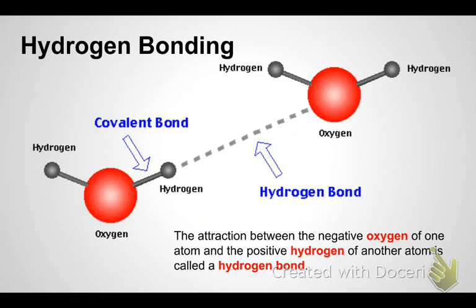Last but not least we have one of the most important properties of water which is hydrogen bonding. Now hydrogen bonding is the attraction between the negative oxygen of one atom and the positively behaving hydrogen of another atom. What this does is it makes sort of a lattice or a network of water molecules.